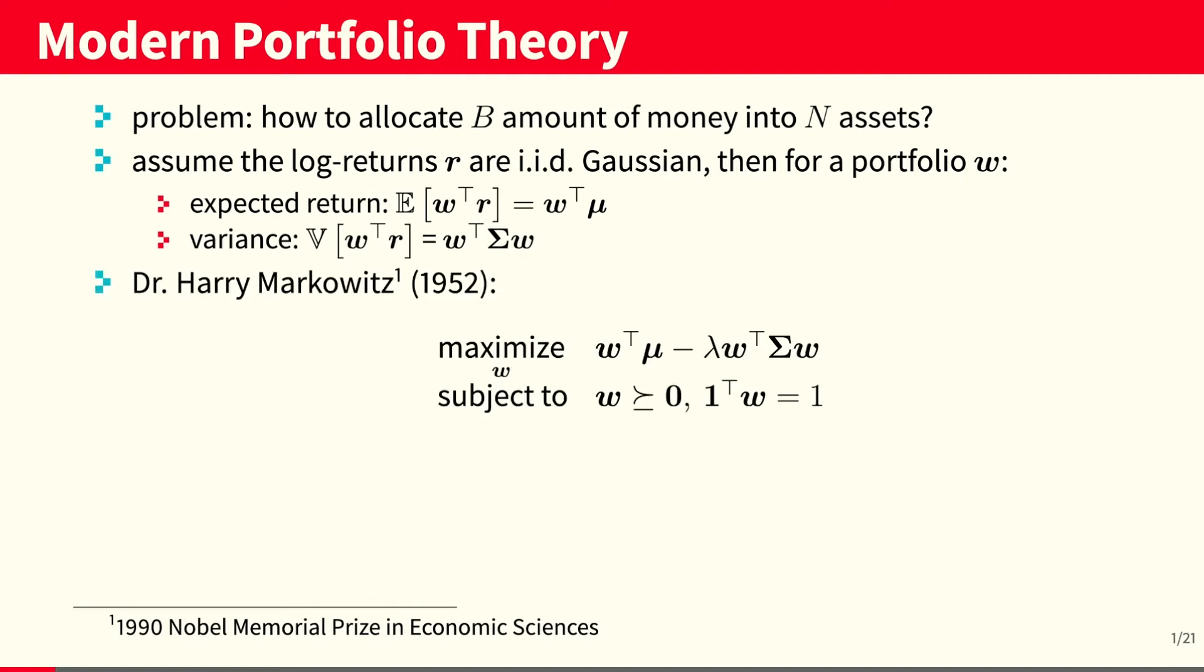In 1952, Dr. Harry Markowitz proposed the following convex optimization problem so as to design a portfolio. This convex problem is very intuitive because it maximizes the expected return of the portfolio while at the same time minimizing the variance of the portfolio, which is often thought as a measure of risk. Despite being very intuitive, this portfolio is surprisingly sensitive to estimation errors on mu and sigma. It also does not perform risk diversification very well.